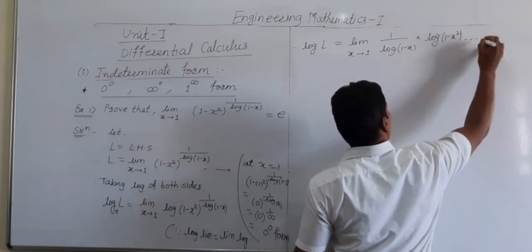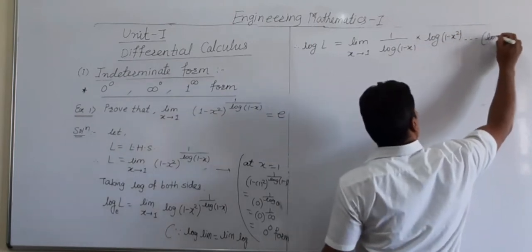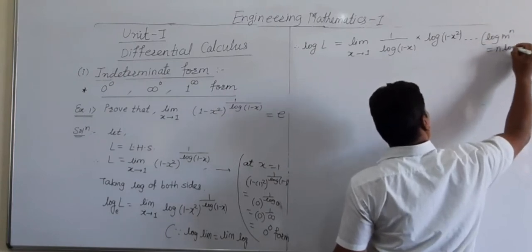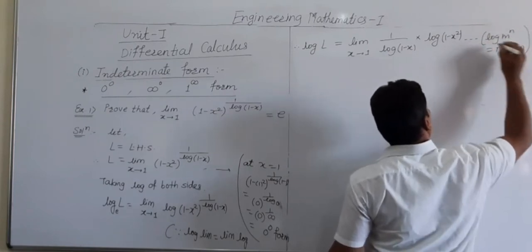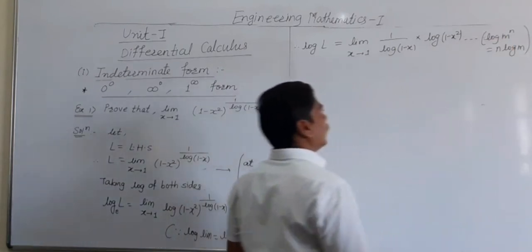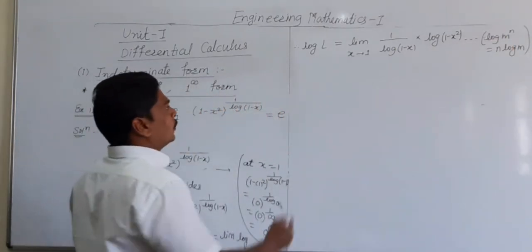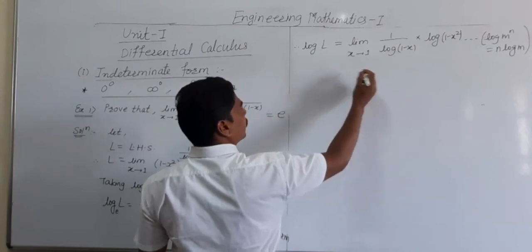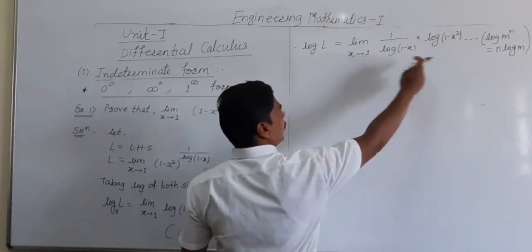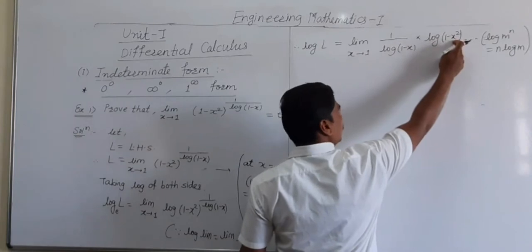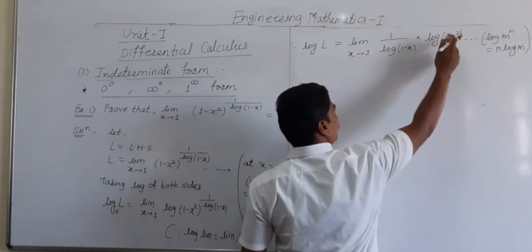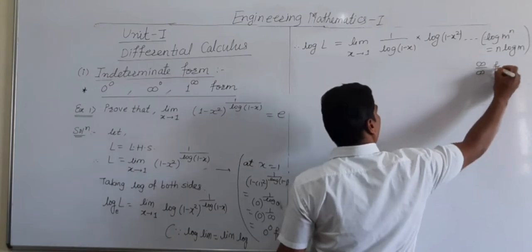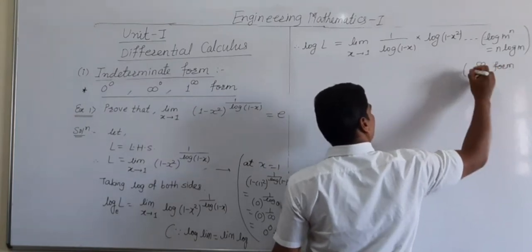Using the formula log A raised to L equals L log A. Now checking the form: putting x equal to 1, the numerator log of (1 minus 1) squared gives log 0 which is infinity, and the denominator log(1 minus 1) also gives log 0 which is infinity. So this is an infinity upon infinity form.